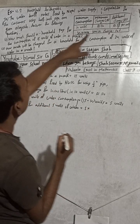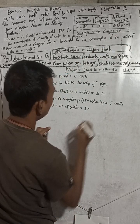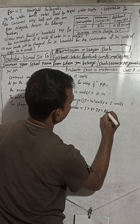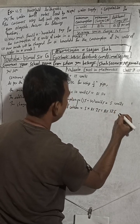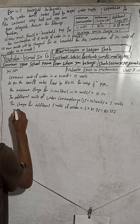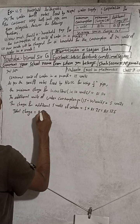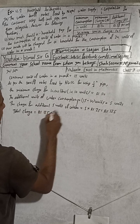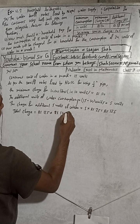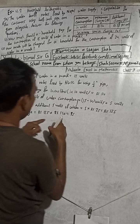The additional charge is Rs.25 per unit, so we multiply: 25 into 5 equals Rs.125. The charge for additional 5 units is Rs.125. Now total charge equals Rs.125 plus minimum charge Rs.110, which gives us Rs.235.